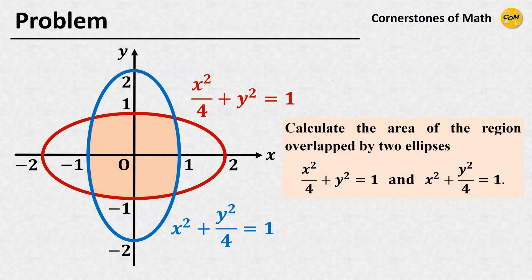Hello, and welcome to yet another video of Cornerstones of Math. For today's video, the problem itself is very simple. We just want to calculate the area of the region overlapped by two ellipses: x squared over 4 plus y squared equals 1, and x squared plus y squared over 4 equals 1.